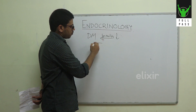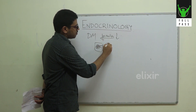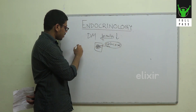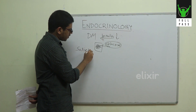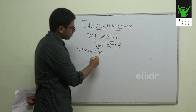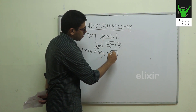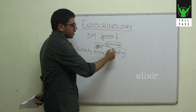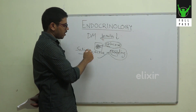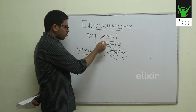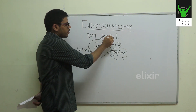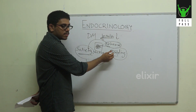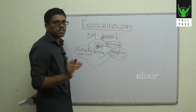Insulin is required for glucose to enter cells — this is important. The hypothalamus has a satiety center which controls our appetite. The satiety center, when stimulated, inhibits the feeding center. For the satiety center to activate, glucose must enter its cells, and insulin is required for that. In diabetes mellitus, without adequate insulin, glucose cannot enter the satiety center, so the feeding center cannot be inhibited, leading to increased appetite — that is the reason for polyphagia in diabetes mellitus.